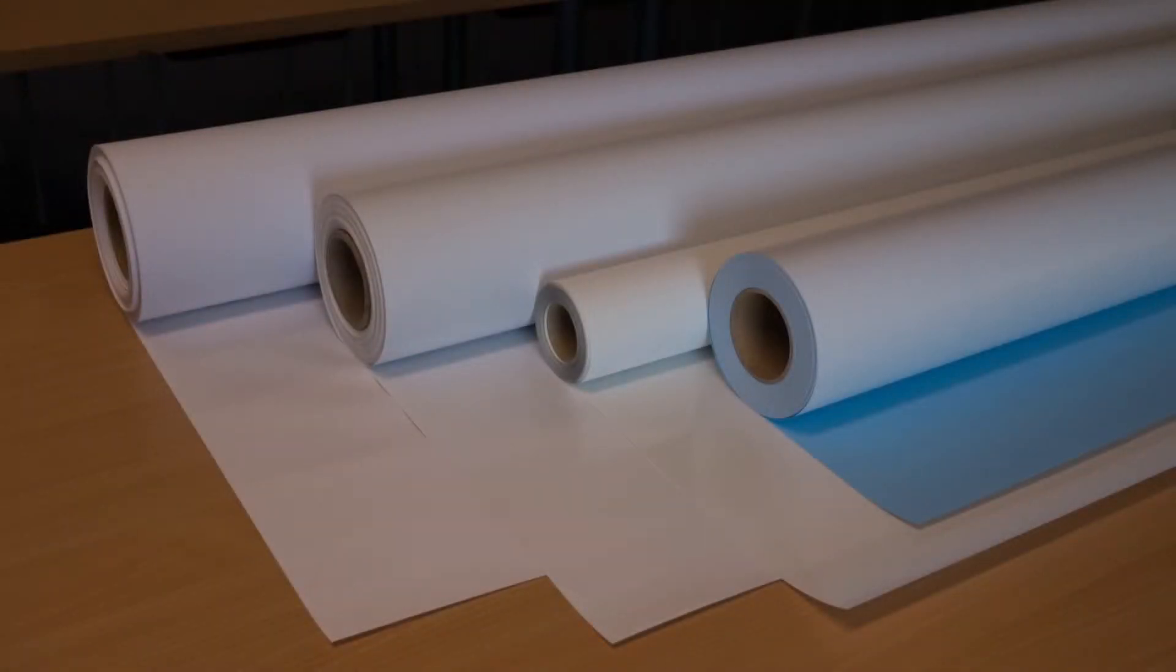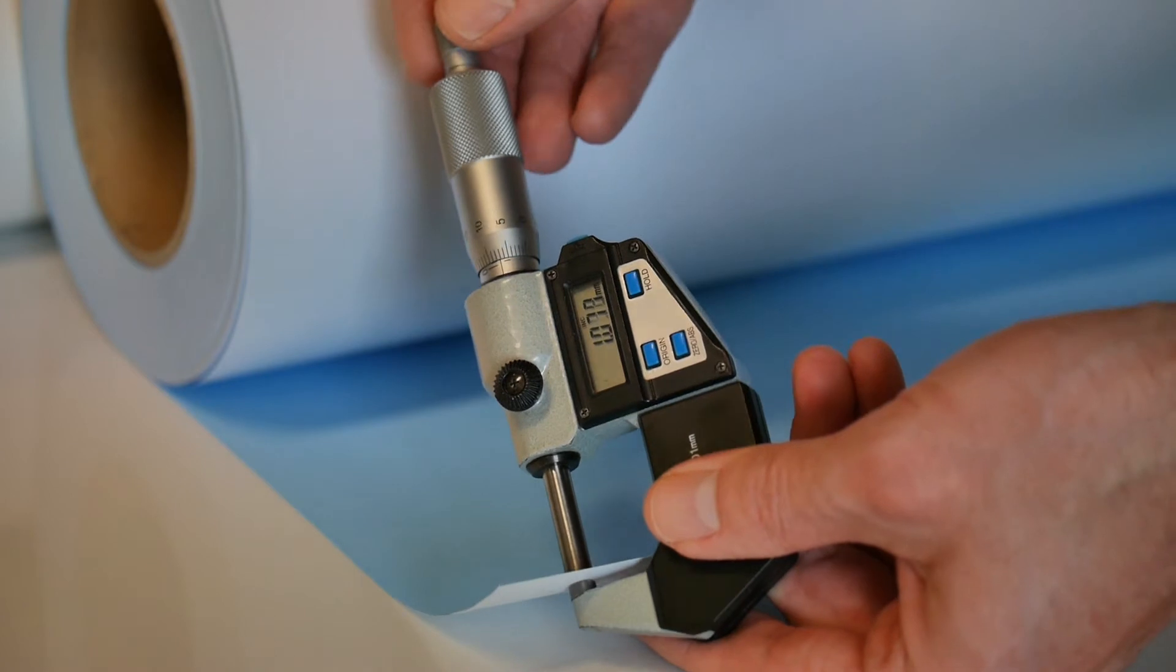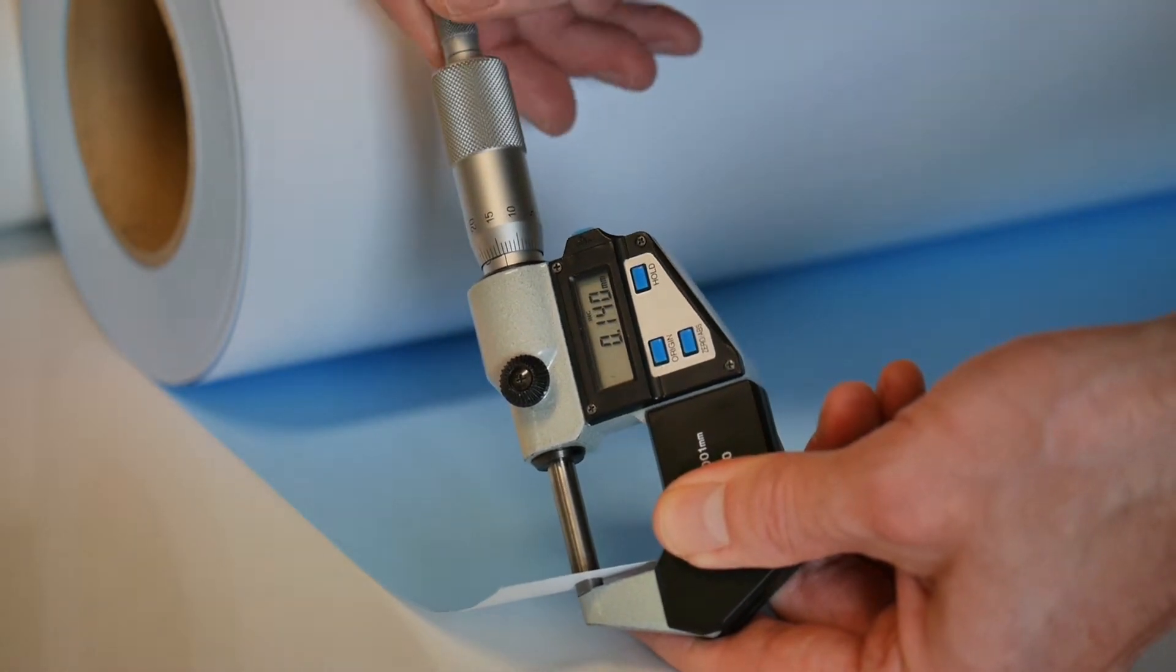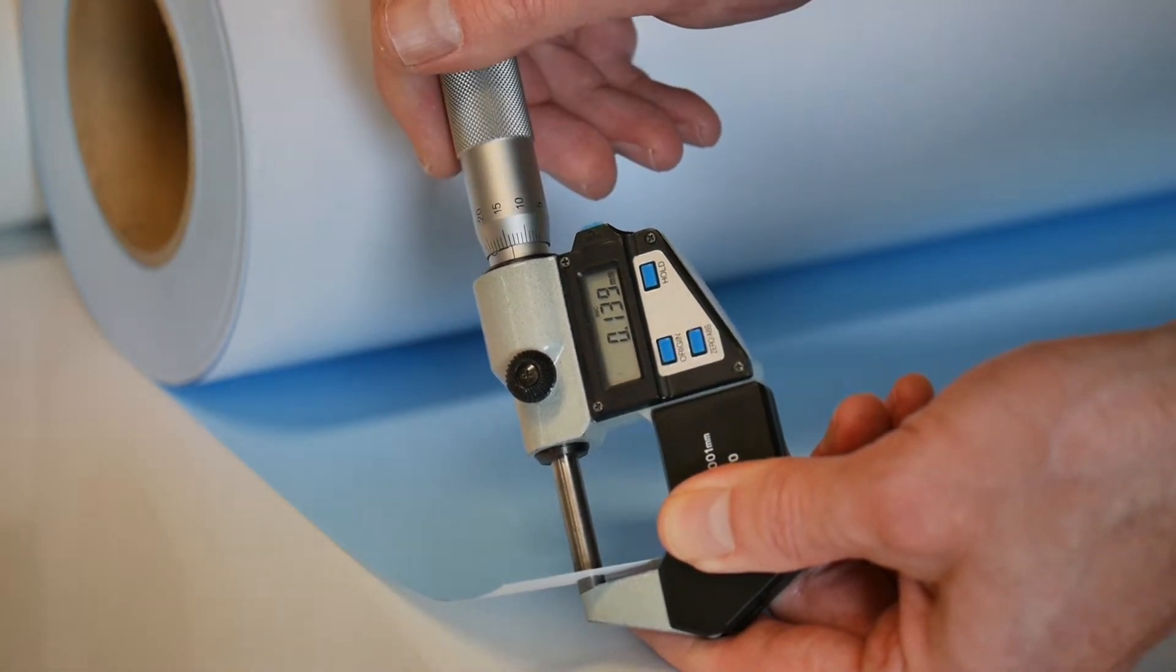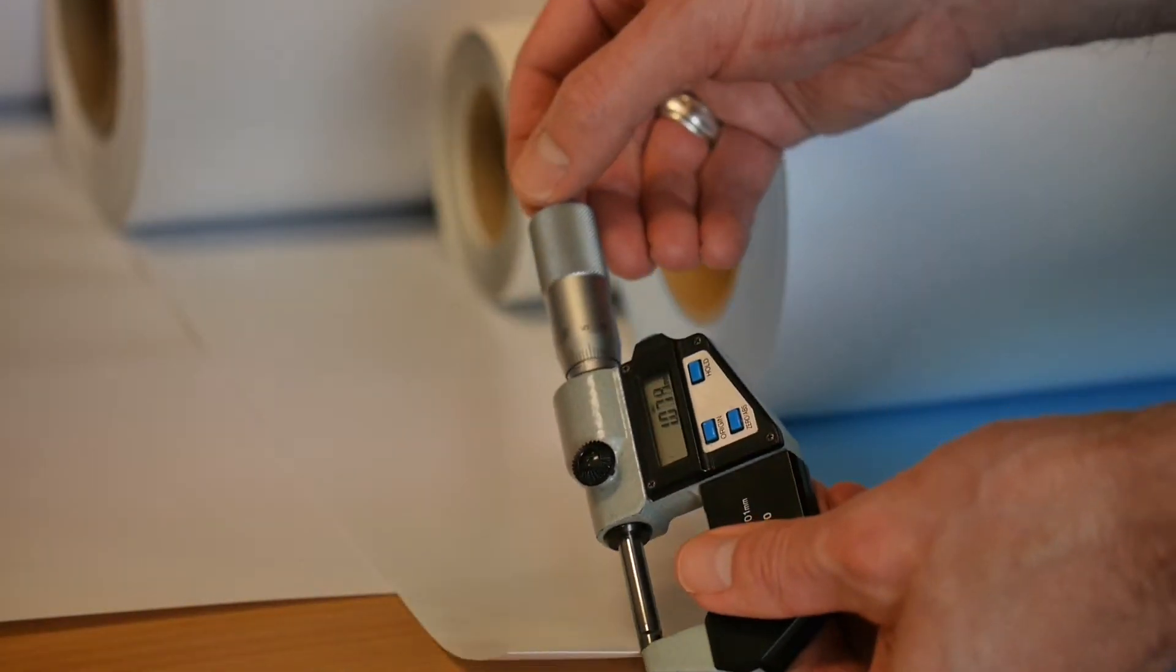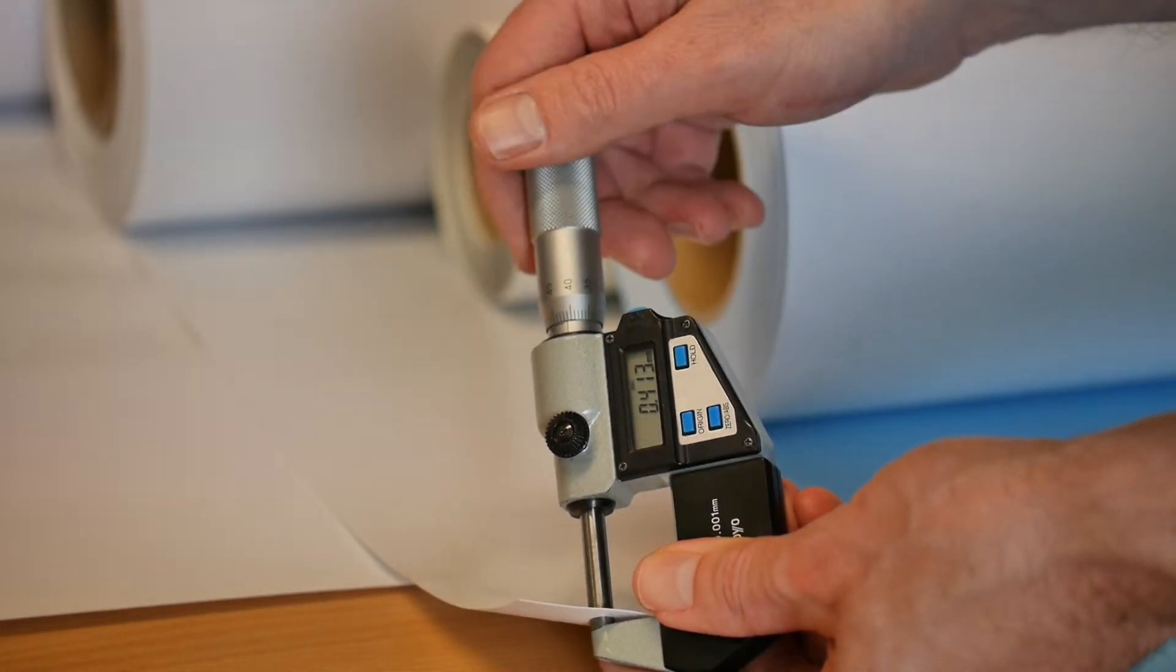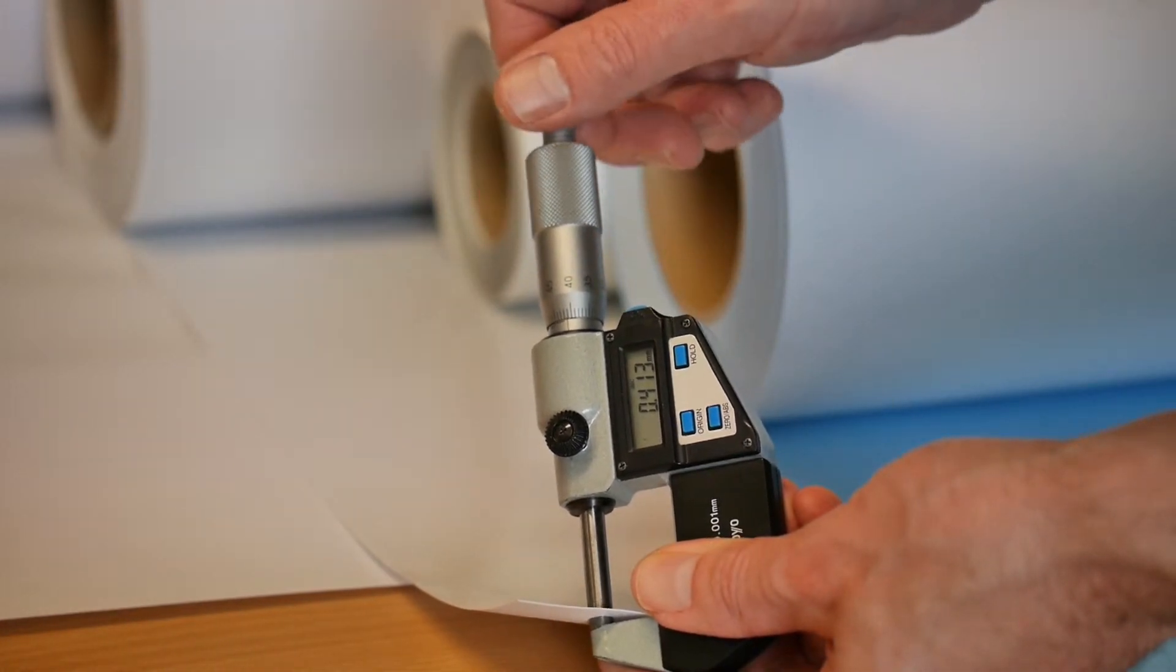Although roll-to-roll printers are only dealing with roll media, the media thicknesses can easily vary from 100 micron up to 1 millimeter. In reality, let's say you would be working one day with a 140 micron poster paper, but the day after with a 400 plus micron thick PVC banner.